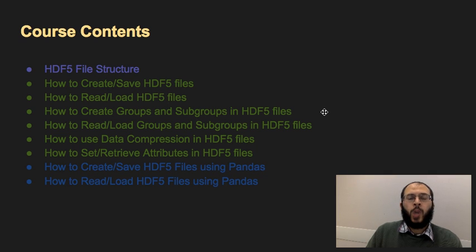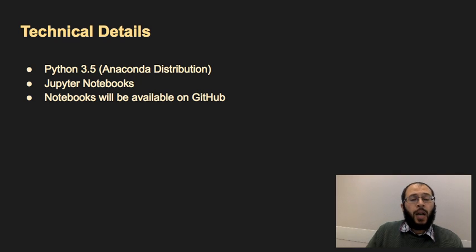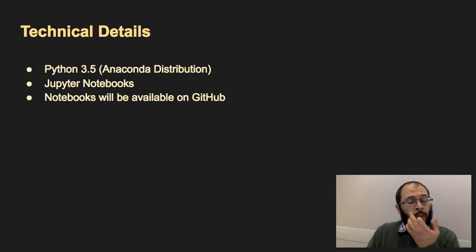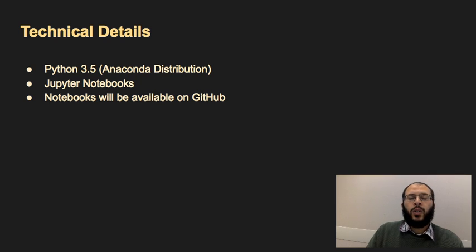Some technical details I wanted to add: I'm going to be using Python 3.5, and more specifically it's going to be the Anaconda distribution. The reason for using this distribution is that it already comes with several packages — for example, it comes already with the pandas package, the numpy package, and the h5py package already installed out of the box, so we don't need to do anything, just use them immediately. It's also easy to load and use Jupyter notebooks.